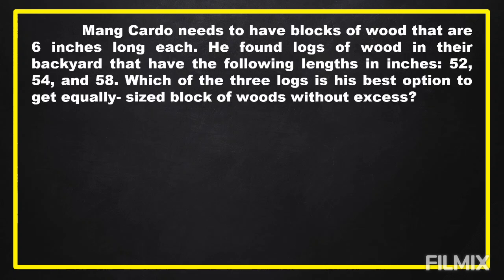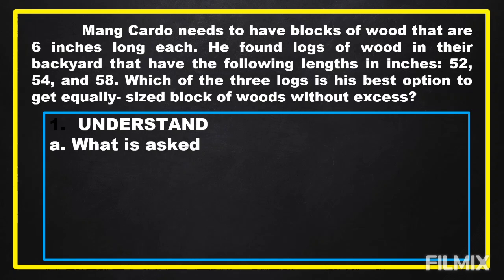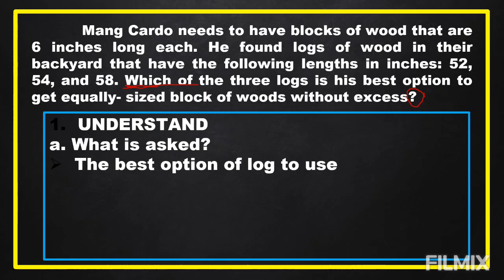To answer a word problem, we're going to read it twice in order for us to understand the problem, and we're going to answer what is asked. The question is most often found at the end of the word problem and ends with a question mark. For beginners, you can copy: which of the three logs is his best option to get equally sized logs of wood without excess? For advanced learners, we should restate the question. So, what is asked in the problem? That is the best option of logs to use.